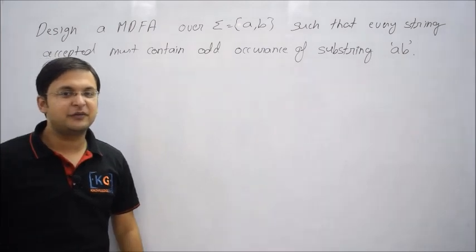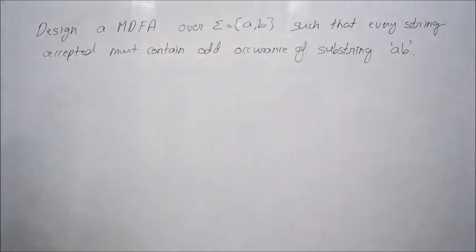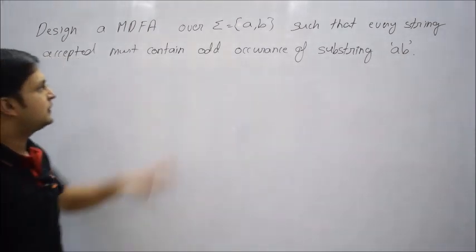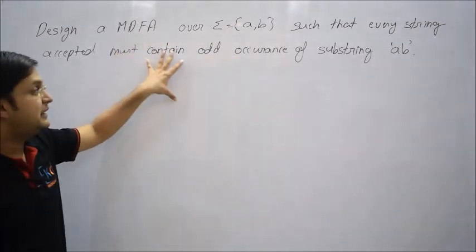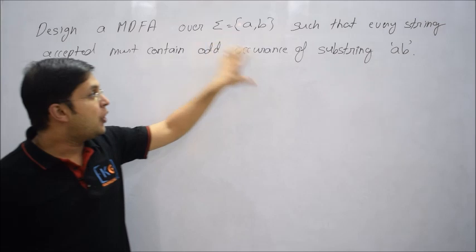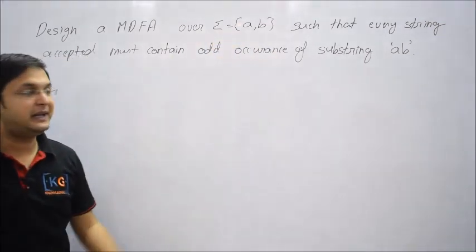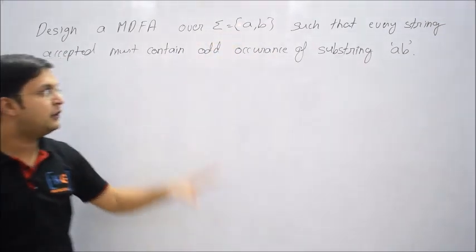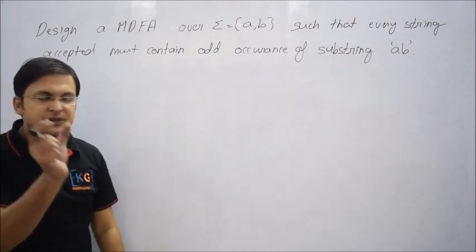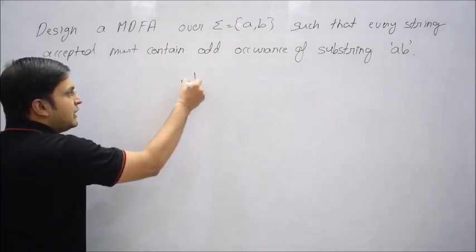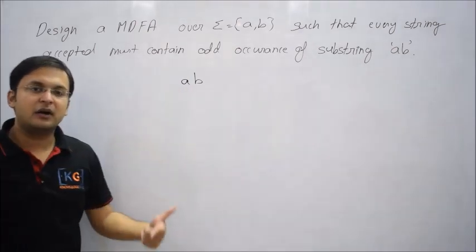Now let's try a different kind of question. Design a minimal DFA over A, B such that every string accepted must contain odd occurrence of a substring AB. That substring AB which we are talking about must occur in odd fashion.